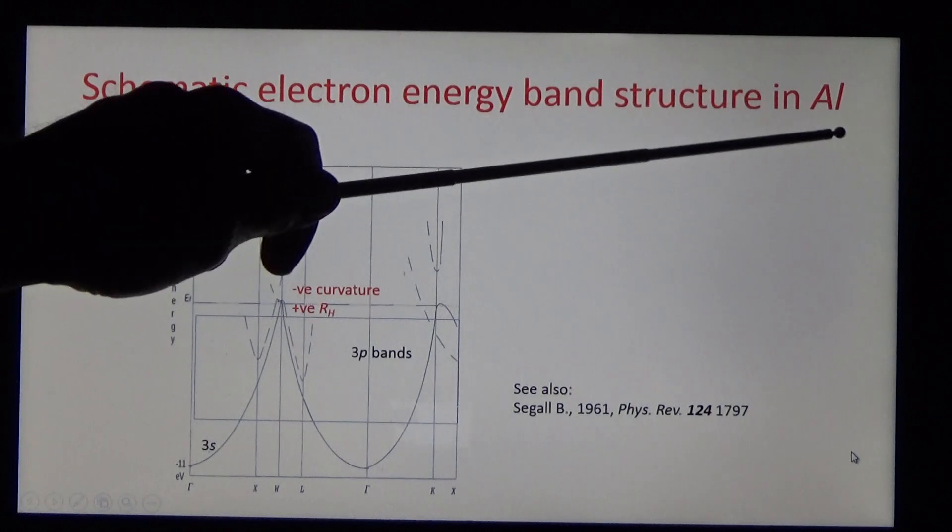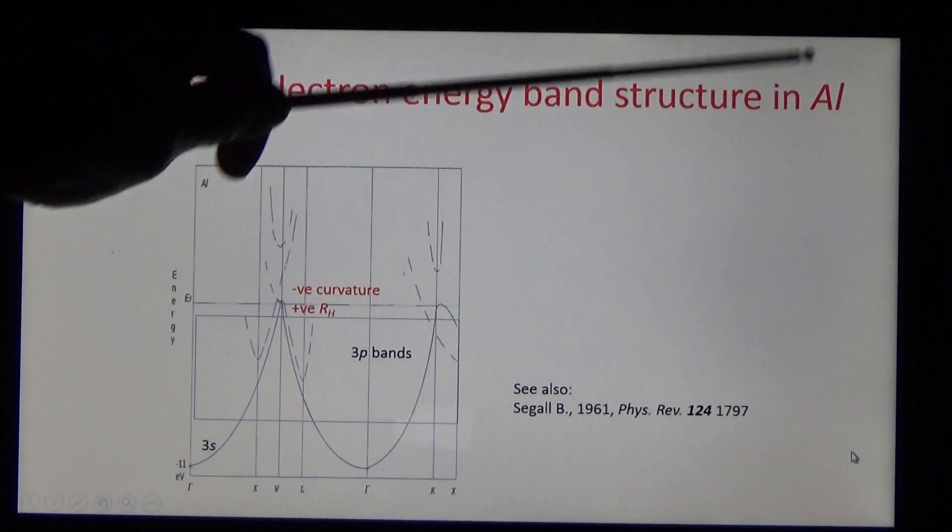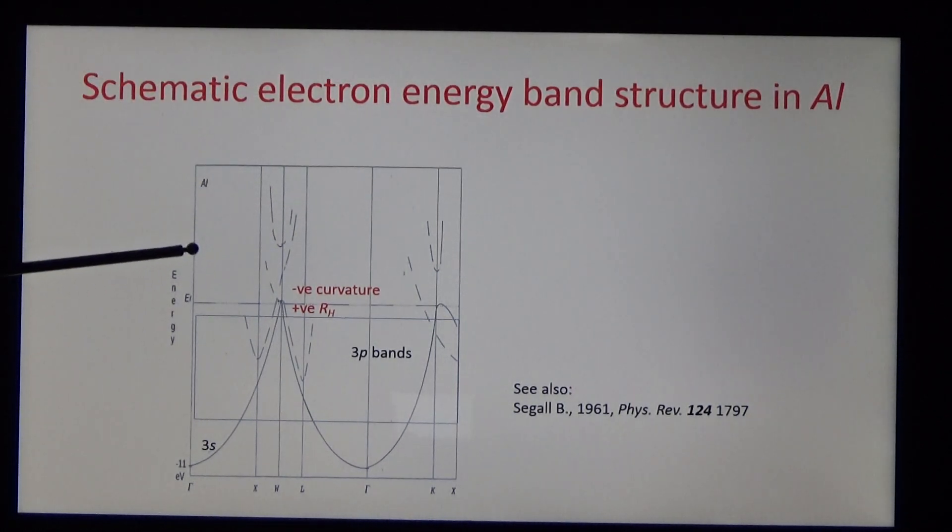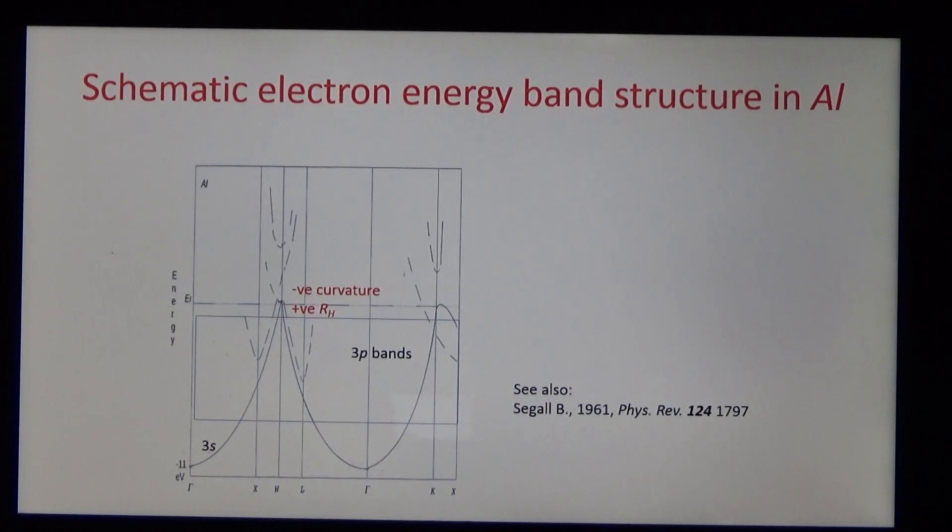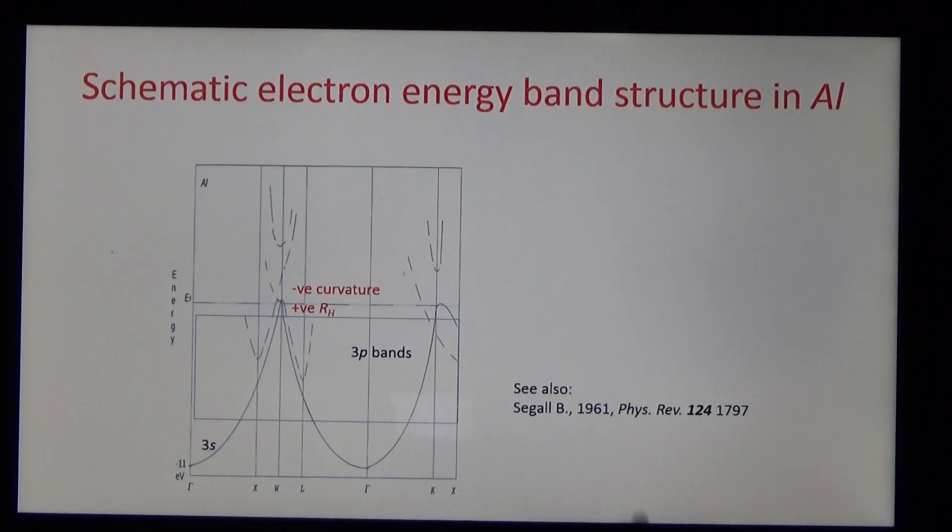Consider, thirdly, aluminum. Weight for weight, it has a conductivity even higher than copper. And here the 3S bands pass through the 3P valence bands and intercept the Fermi level where the curvature is negative and the Hall coefficient is positive.